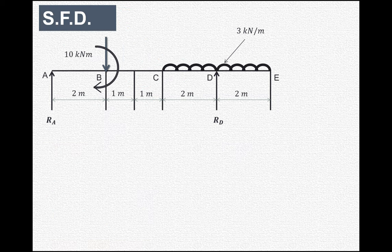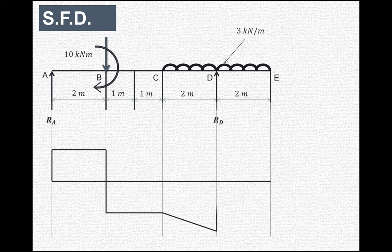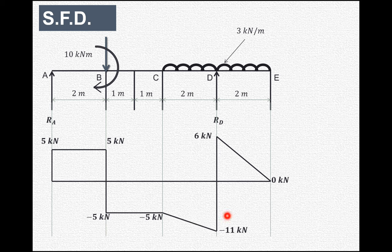Now let us draw the shear force diagram. Shear force at A is 5 kN, it remains the same at B left as 5 kN, then drops to minus 5 kN exactly at B. Shear force at C left and C is minus 5 kN. Due to the UDL it decreases linearly so shear force at D left is minus 11 kN. Exactly at D it jumps to 6 kN due to reaction RD. Shear force at E is 0.